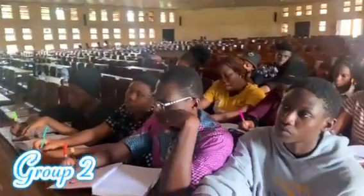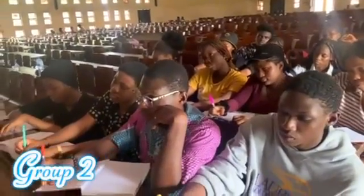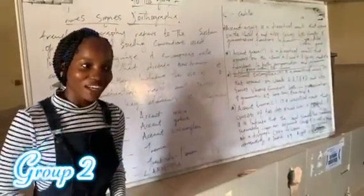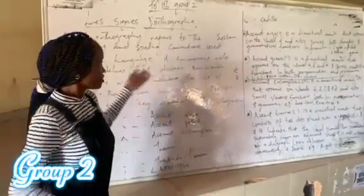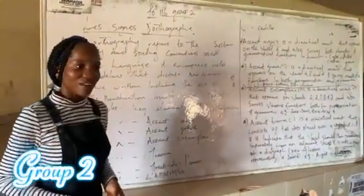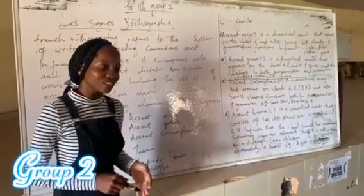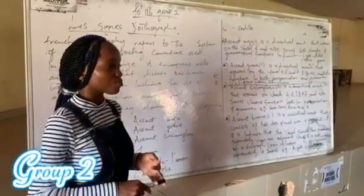Autographic Signs in French refers to the system of writing and spelling conventions used in the French language. It encompasses the rules and guidelines that detect how French words are written, including the use of accents, contraction marks, and spellings of certain words. These signs are seven in number and help differentiate between the French language, the English language, and also the Spanish language.